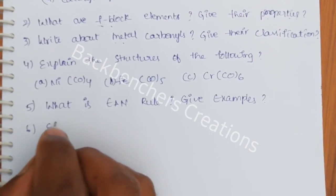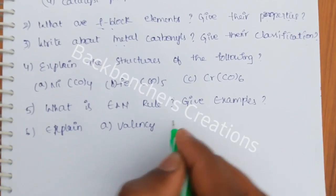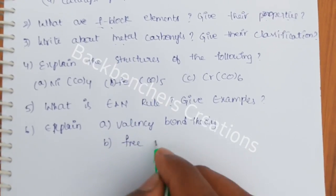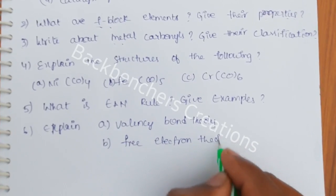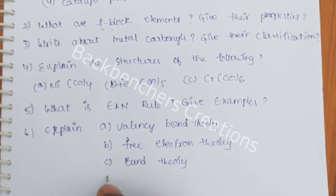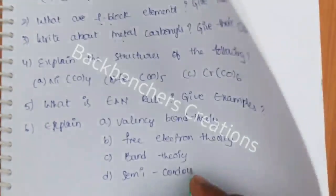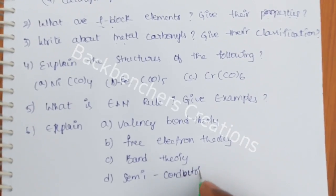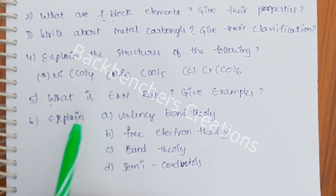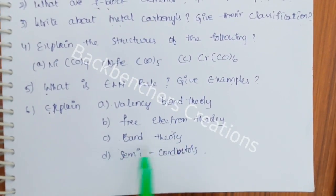Sixth question — choose one: (a) Explain valency bond theory, (b) free electron theory, (c) band theory, or (d) semiconductors. What is the EAN rule? Explain valency bond theory, band theory, and semiconductors.